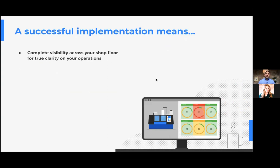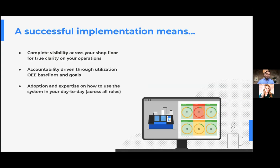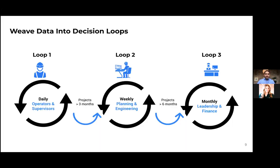More specifically around technology, a successful implementation means having complete visibility across the shop floor — true clarity on your operations — having accountability throughout your organization by setting baselines and goals, and adoption and expertise across your entire team across all roles: engineering, operations, maintenance. This is how data can be used: your day-to-day operations team uses it to eliminate production surprises, on a weekly basis for engineering focus and production planning, and long-term for capex or process changes.